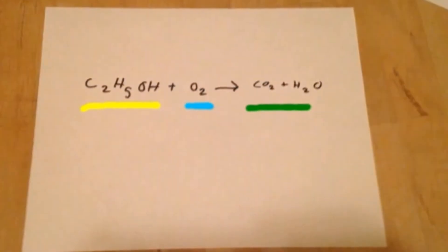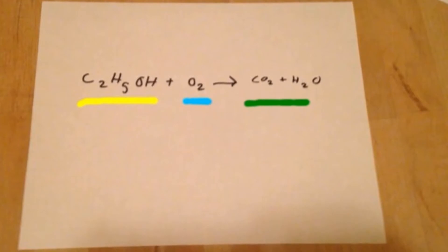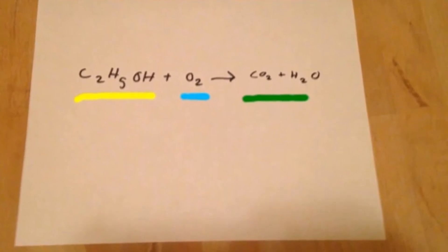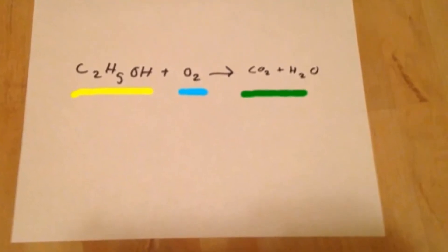A reactant is a substance that undergoes a chemical reaction. Once these two reactants undergo a chemical reaction, two products are formed: carbon dioxide and water. A product is a substance formed after a chemical reaction has taken place. In a combustion reaction, CO2 (carbon dioxide) and H2O (water) are always the products.